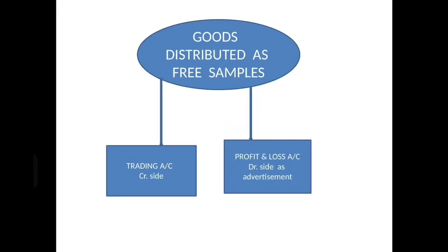Next, goods distributed as free samples. Why are goods distributed as free samples? Simple — for advertising. So profit and loss account debit side as advertisement. One effect is profit and loss account debit side as advertisement, and the other effect is trading account credit side. Or you may even deduct it from purchases — the net effect is the same.